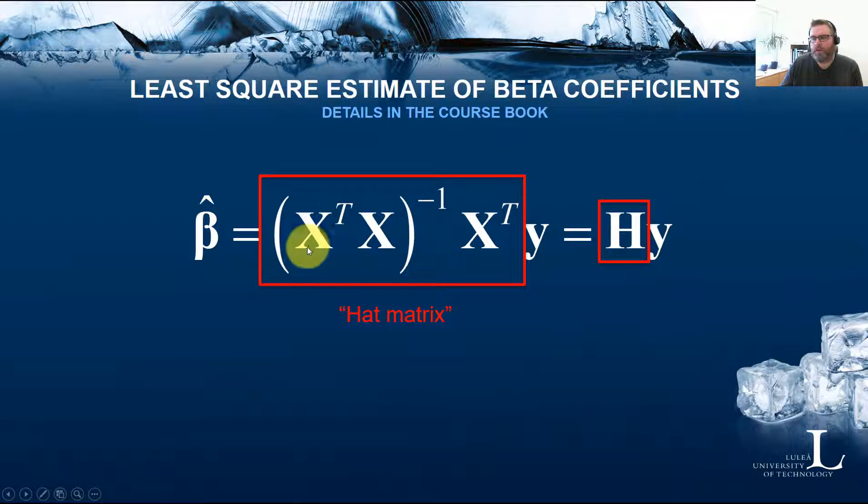You can try to remember that the X transpose X will make this matrix a square matrix with equal number of rows and columns, which is very important for it to be invertible. This matrix algebra operation is what the software will use to get you your least squared estimates of the beta values.